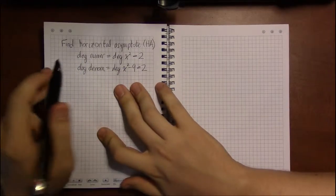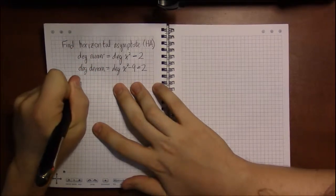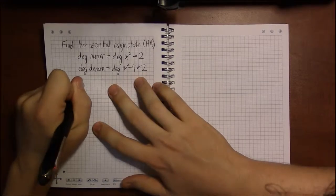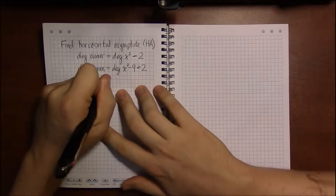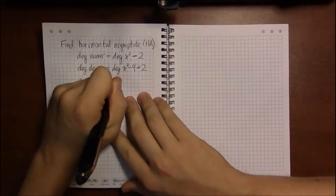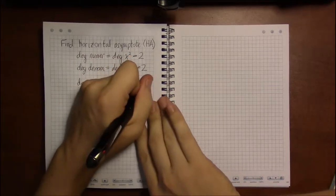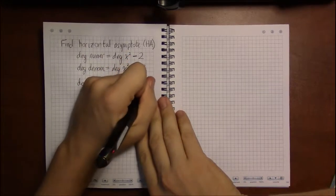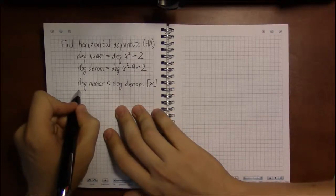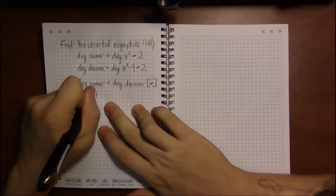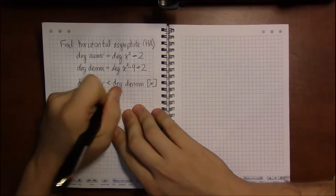I'm going to go through all three cases to cover all the examples in this one video. But we're only going to fall into one particular case. If the degree of the numerator is smaller than the degree of the denominator, which is not our case. We are not in this case. Then you have one and only one horizontal asymptote, which is x equals 0.